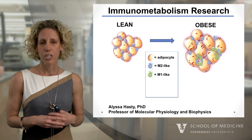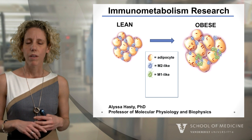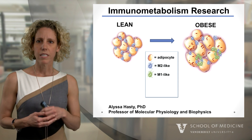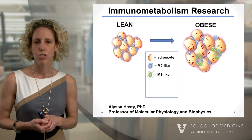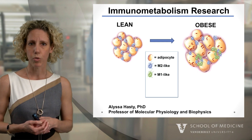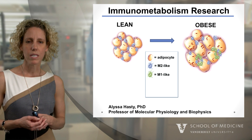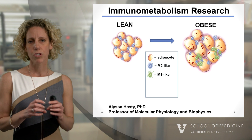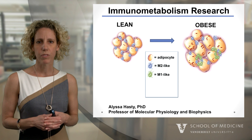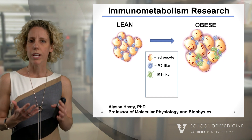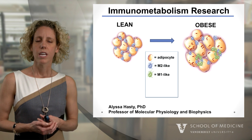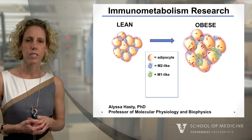Something discovered just over a decade ago is that you have an increase in immune cells in the obese adipose tissue compared to the lean. I've depicted here the immune cells in the lean adipose tissue as M2-like — these are macrophages that are relatively anti-inflammatory. Whereas in the obese adipose tissue, the green cells are forming structures called crown-like structures, and these M1-like macrophages are pro-inflammatory. So the obese adipose tissue generally has a more pro-inflammatory phenotype.